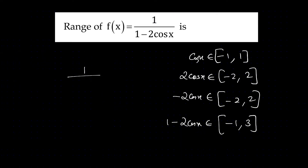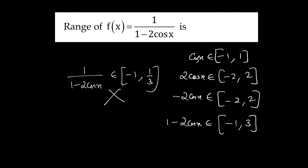Therefore, 1 by 1 minus 2cos x lies between minus 1 and 1 by 3. So 1 by 1 minus 2cos x lies between minus 1 to 3.